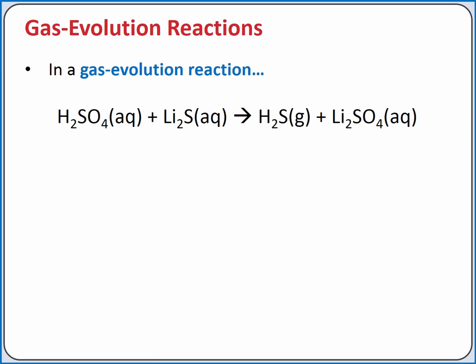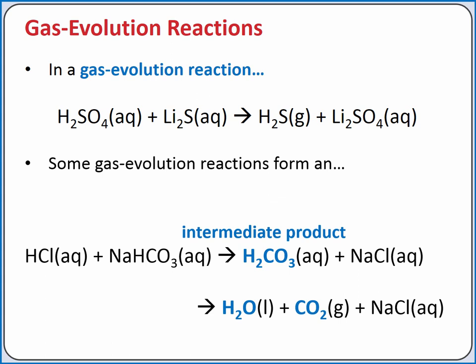Some gas evolution reactions form an intermediate product. For example, when hydrochloric acid reacts with sodium hydrogen carbonate, carbonic acid is produced as an intermediate product. The carbonic acid can decompose to produce water and carbon dioxide gas.